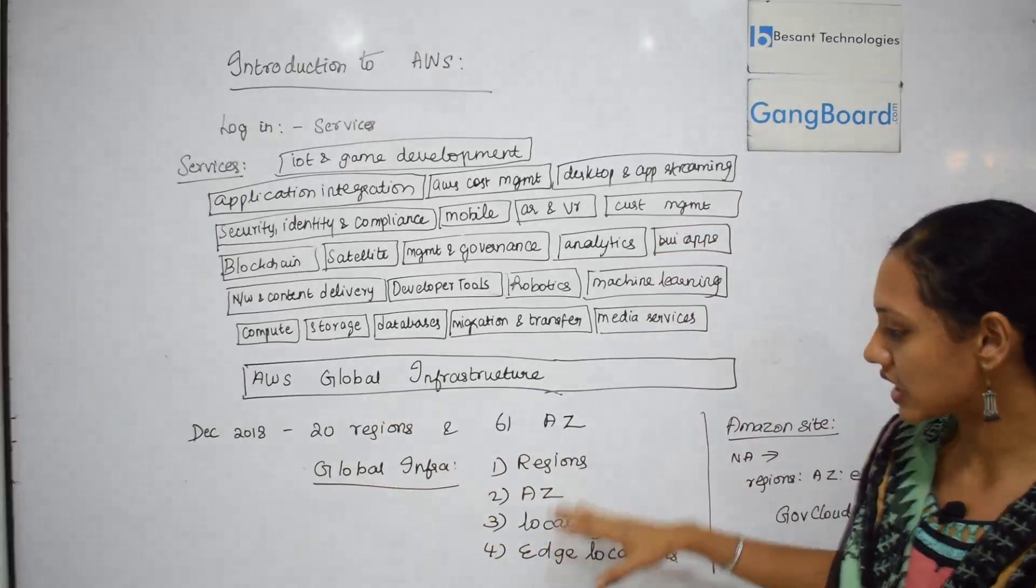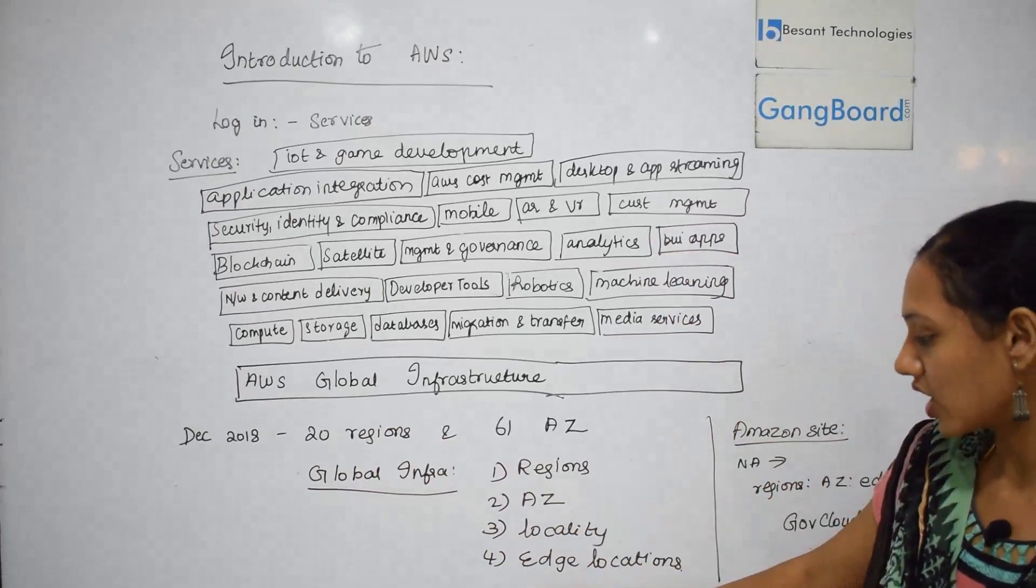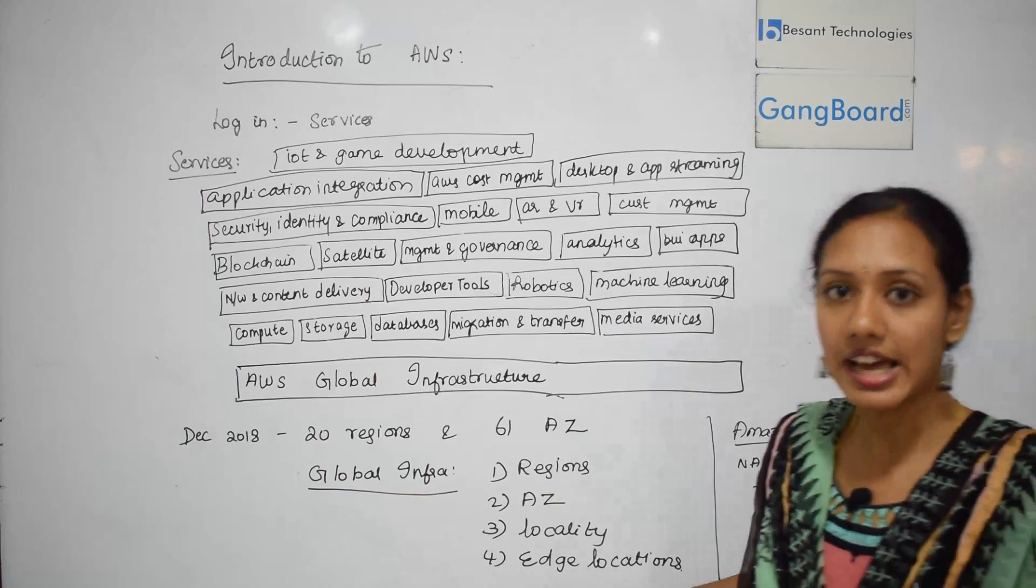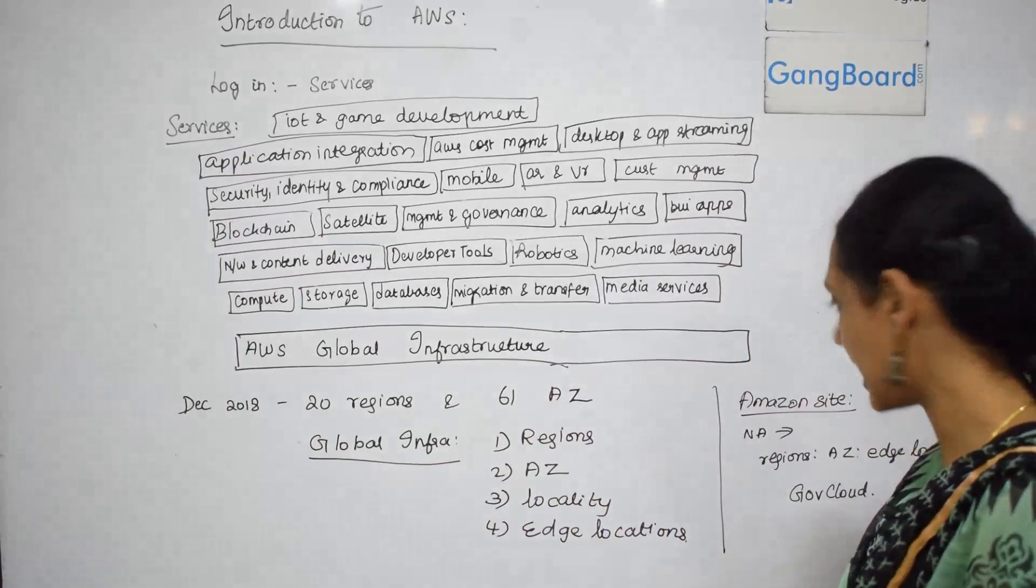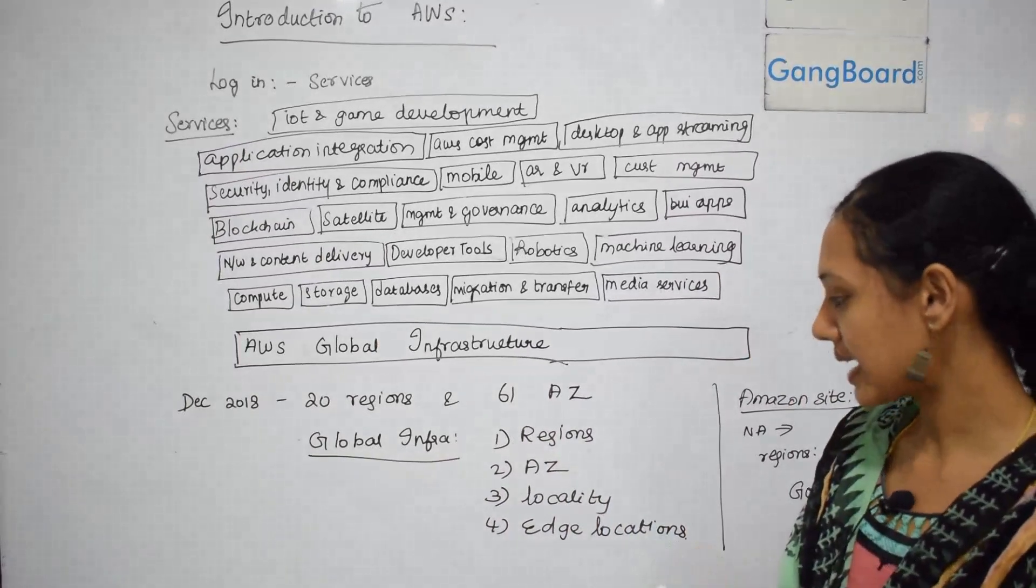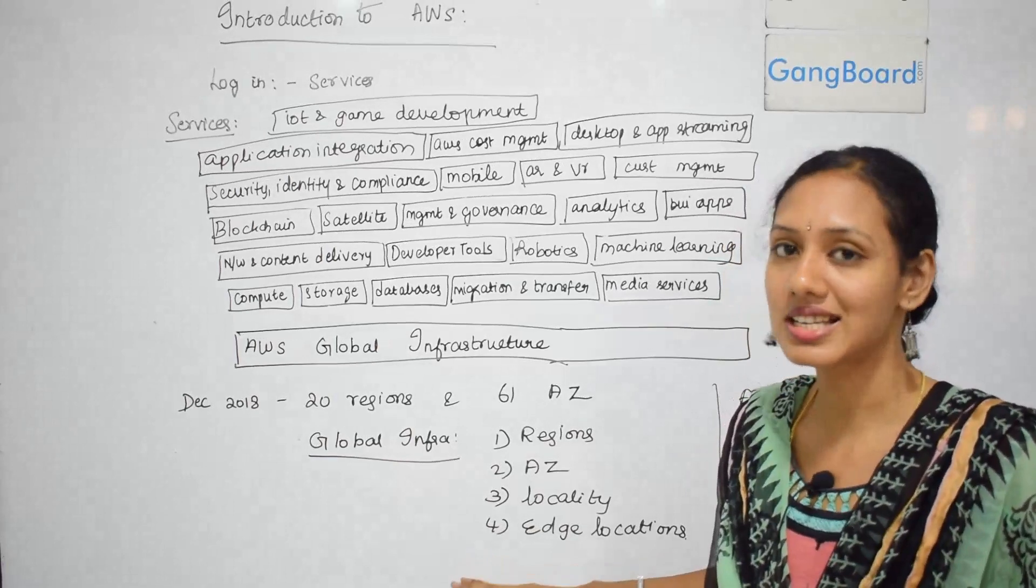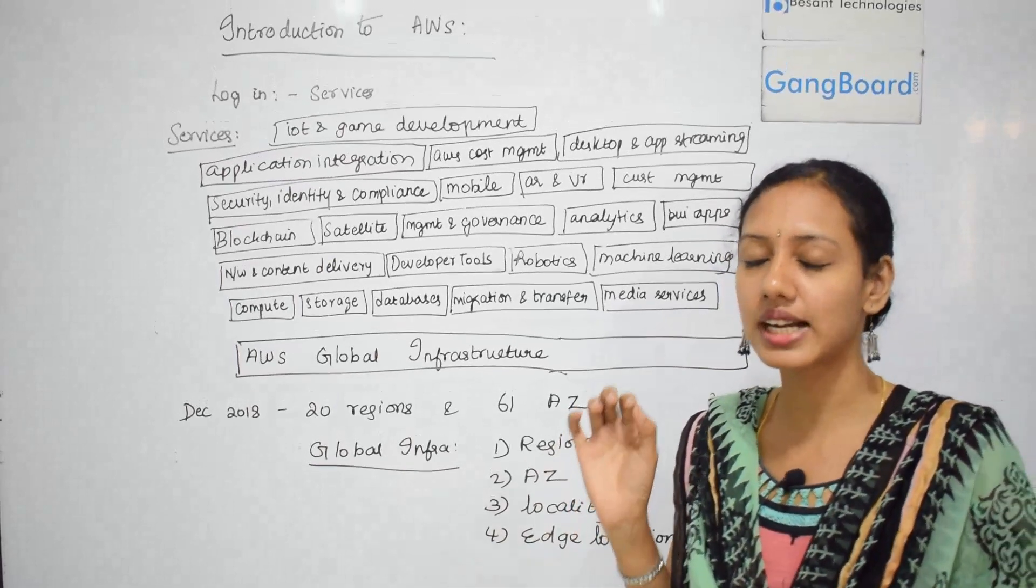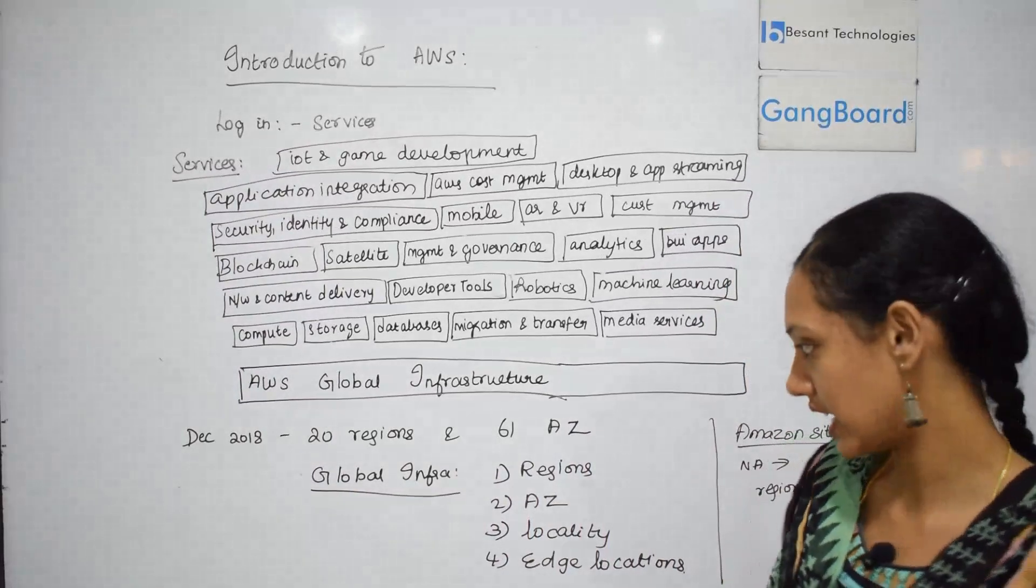Within the availability zone, we have something called locality where the AWS is put up. Then we have something called edge location. Edge location is where the end users will access the services in AWS. For example, AWS uses this edge location service called CloudFront. CloudFront or content delivery network is the service that is used by AWS.